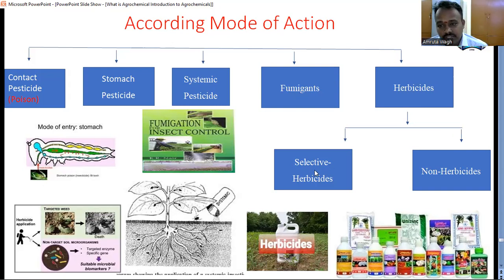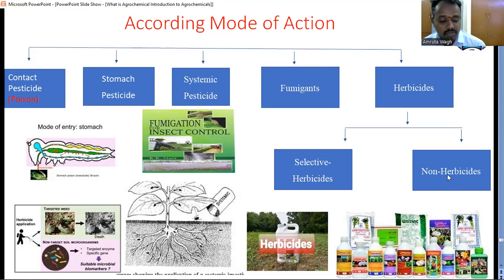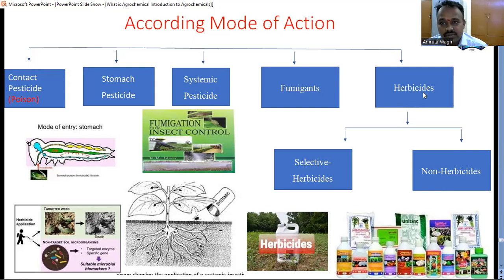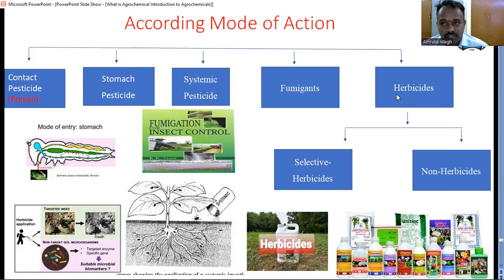In herbicides, there are two types: selective and non-selective. Selective herbicides are selective in action and only kill the weeds, not the crop. Non-selective herbicides are not selective in action and may kill the main crop along with the weeds. Only trained persons are required to spread non-selective herbicides.